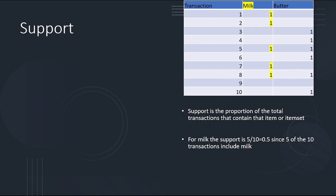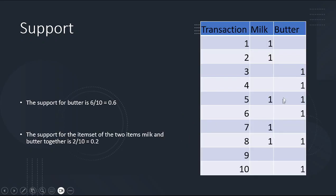So let's calculate support. Support is the proportion of transactions that contain that item. For milk, support is 5 out of 10. The support for butter is 6 out of 10 — transactions one, two, three, four, five, six. And the support for both milk and butter together is 2 out of 10. That is the support calculation, which is pretty easy.